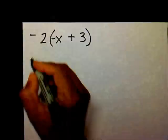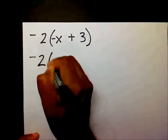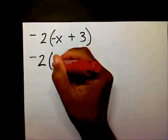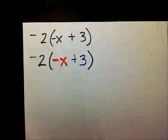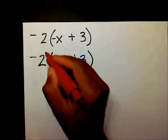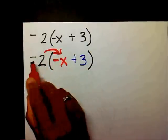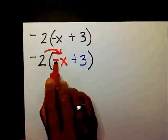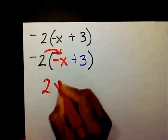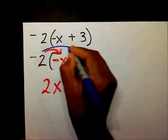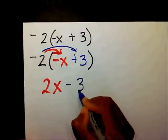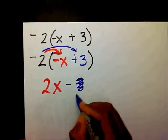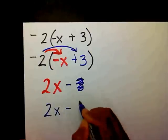Welcome back. We have negative 2 times, this time, negative x plus 3. This is not difficult — you're going to do the exact same thing. Take negative 2 and multiply it times negative x: negative 2 times negative x is positive 2x. Then take negative 2 and multiply it times 3: negative 2 times positive 3 is negative 6. So the answer is 2x minus 6.